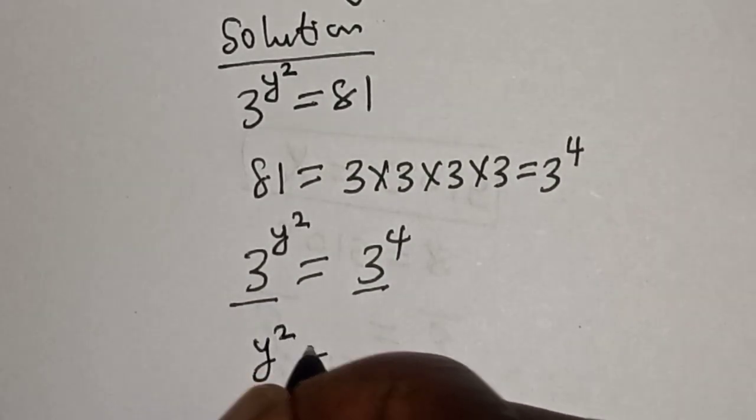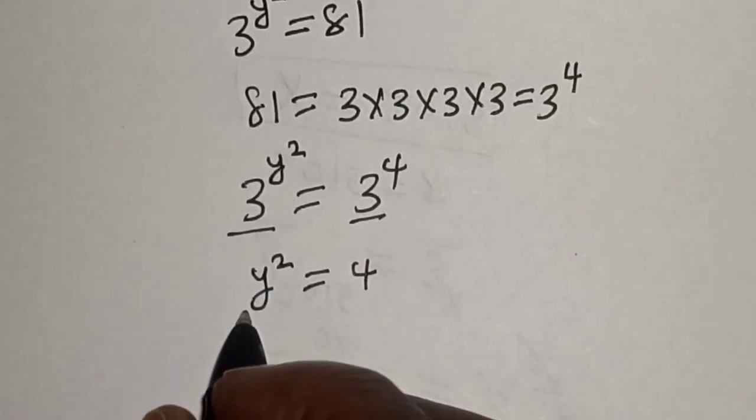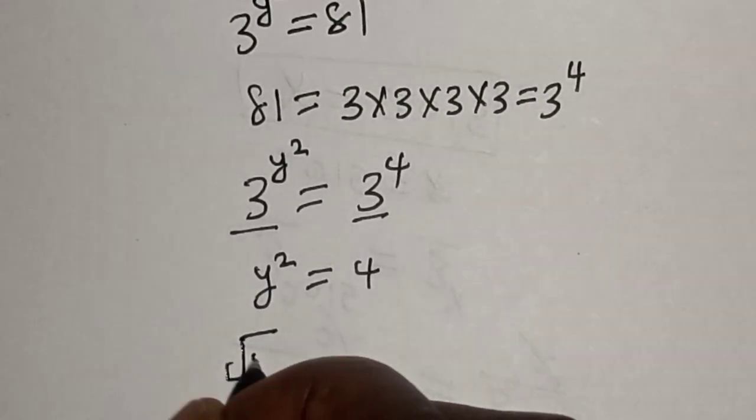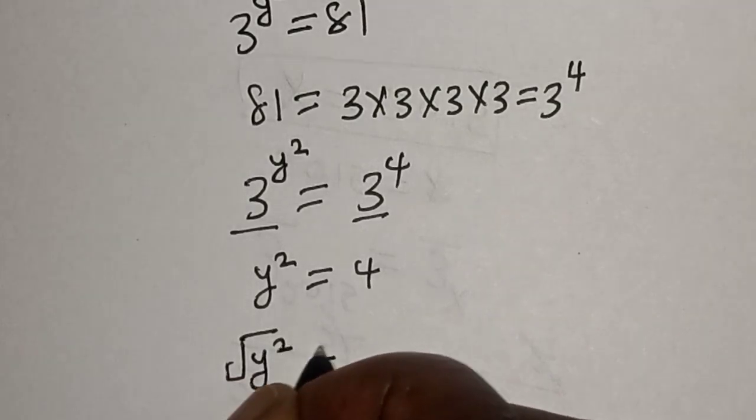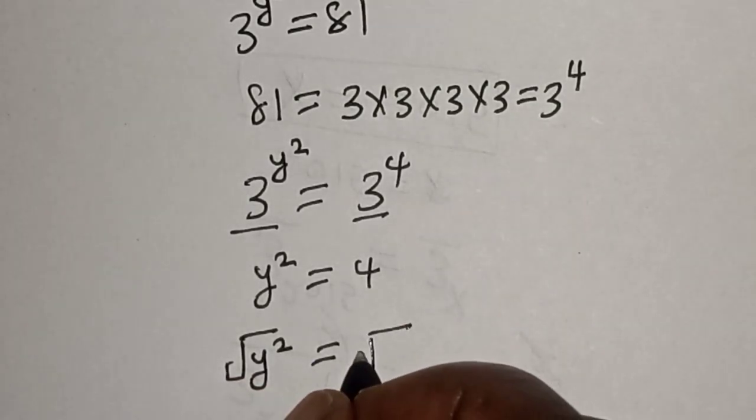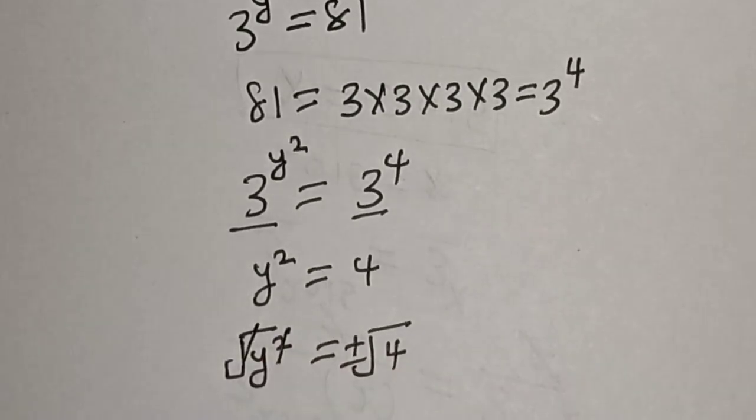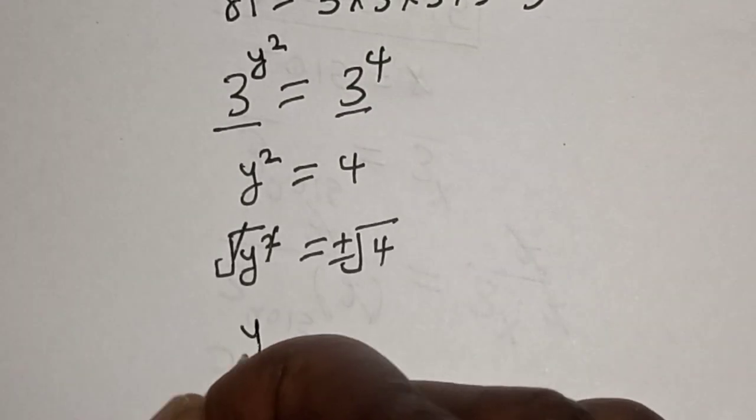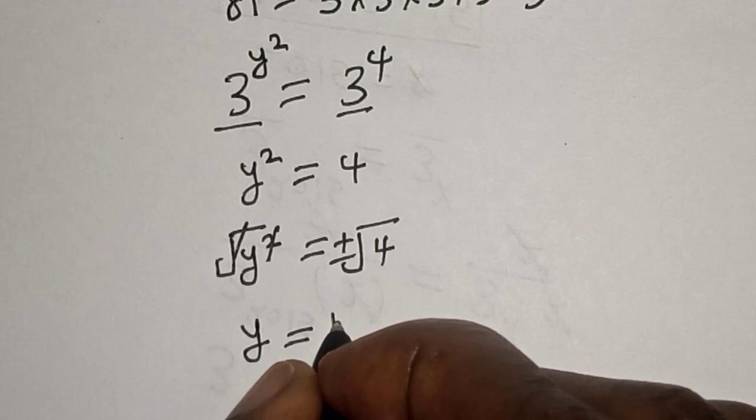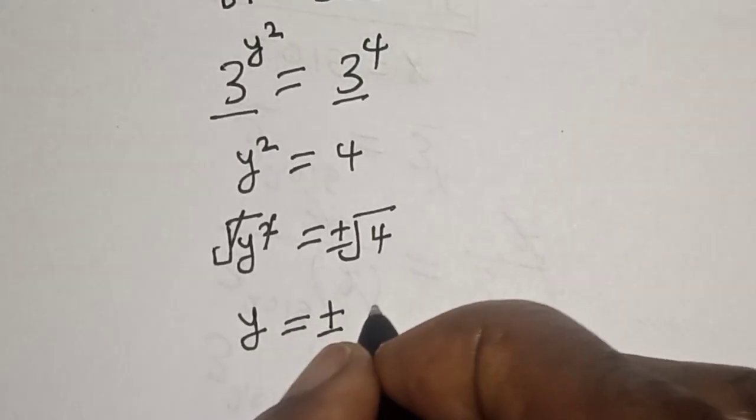Y square is equal to 4. Now let's take the square root of both sides. Square root of y square is equal to square root of 4 plus or minus. This one will cancel this. Y is equal to plus or minus 2.